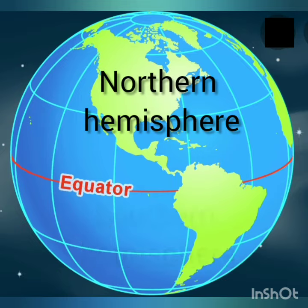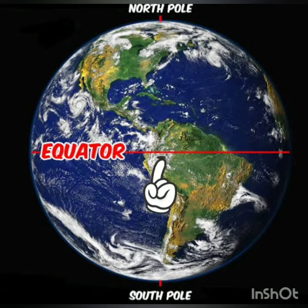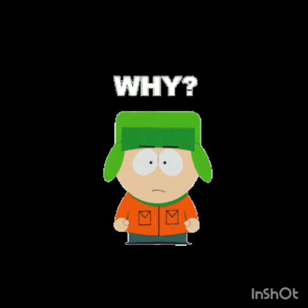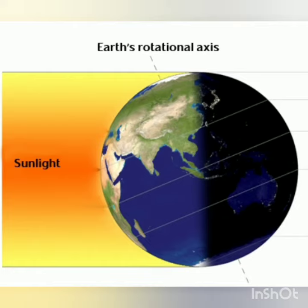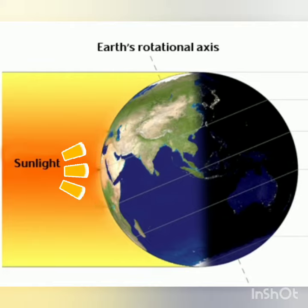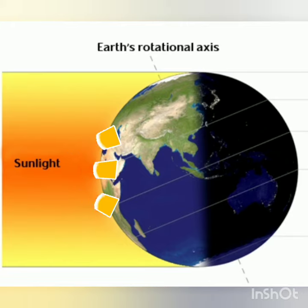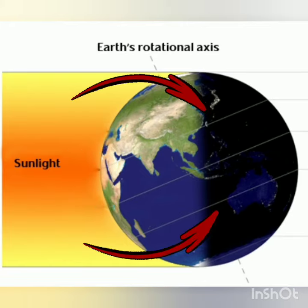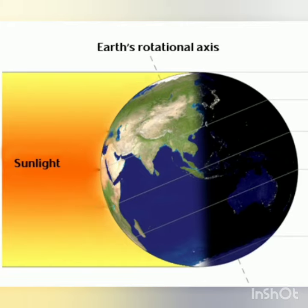Children, do you know the equator is very hot? Why? Because the sun's rays directly fall on this area. The sun's rays on the poles are less, thus making the poles cooler.